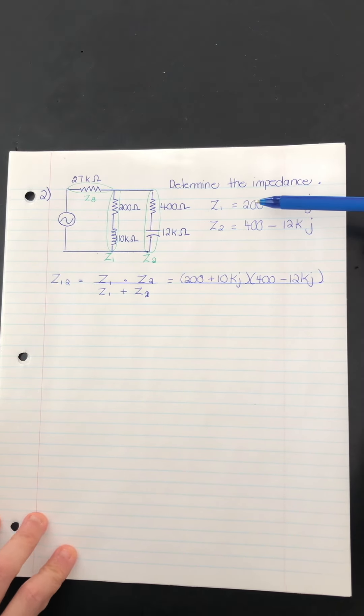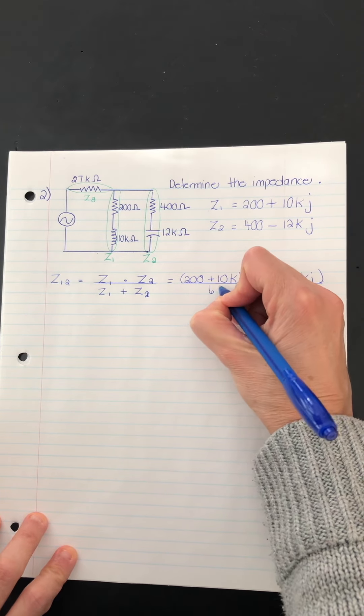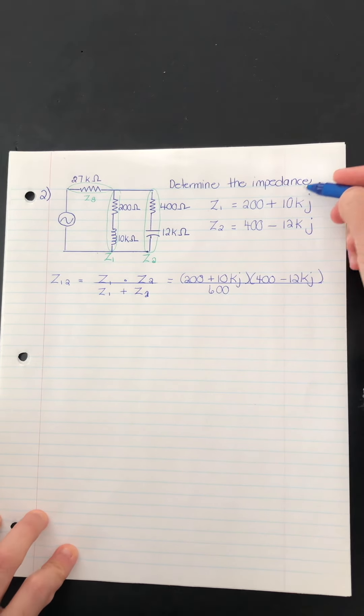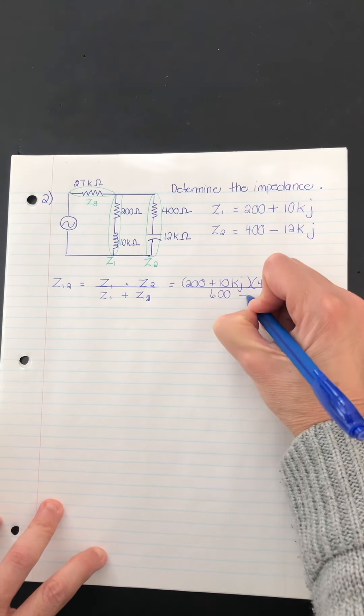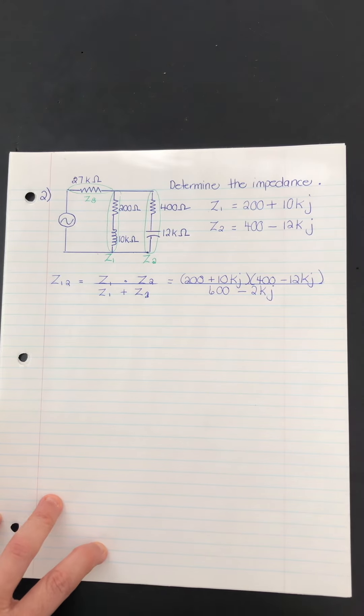So I can do that right here. So here I just have to add 200 plus 400. So that is 600. And now what will the imaginary part be? We have positive 10K added to negative 12K. That gives you negative 2K times J.